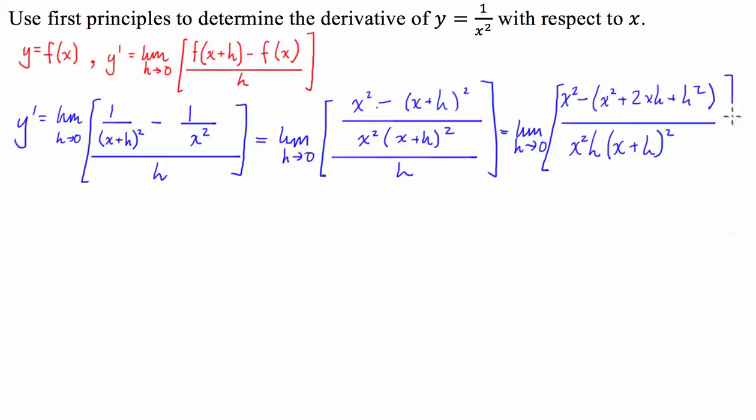Now, at the moment, that's looking pretty rank. So, what we're going to do now is we're going to combine... We're going to actually take away this from this. So, this is now equal to the limit as h approaches 0 of... x squared take x squared is nothing. Then we've got minus 2xh, minus h squared. All divided by x squared h (x plus h) all squared.